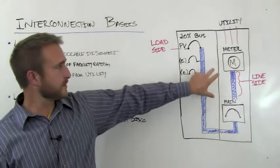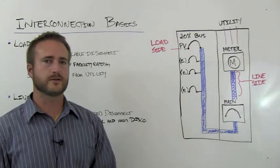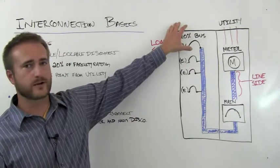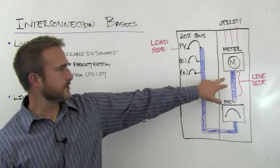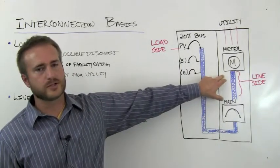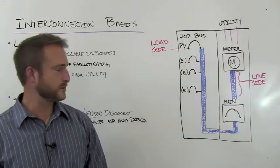For the line side, you're connecting in between the meter and the main disconnect. And what that allows you to do is connect up to the full rating of your gear in PV. And that's usually what people like to do. And you notice you're still on the load side of the main meter, so you're backfeeding that meter and you're offsetting your power consumption.